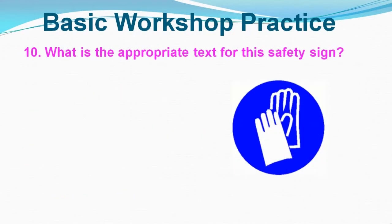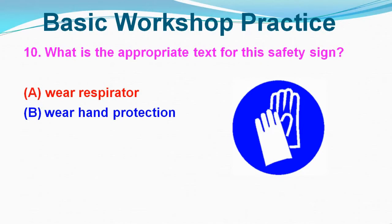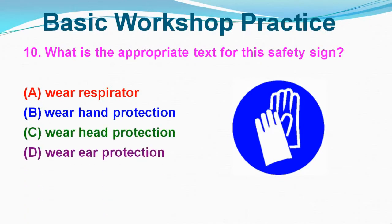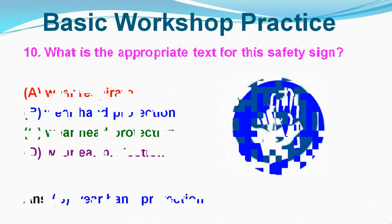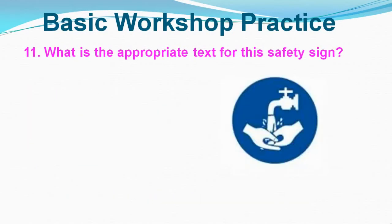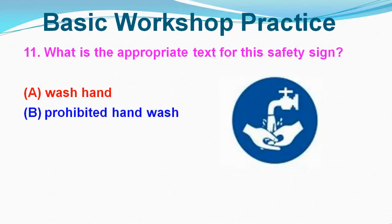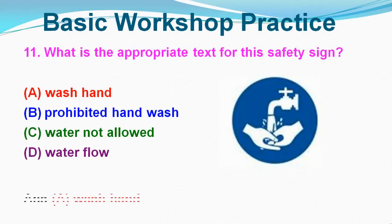Question No. 10: What is the appropriate text for this safety sign? Option A: Wear Respirator, Option B: Wear Hand Protection, Option C: Wear Heat Protection, Option D: Wear Air Protection. Correct answer is Option B, Wear Hand Protection. Question No. 11: What is the appropriate text for this safety sign? Option A: Wash Hand, Option B: Prohibited Hand Wash, Option C: Water Not Allowed, Option D: Water Flow. Correct answer is Option A, Wash Hand.